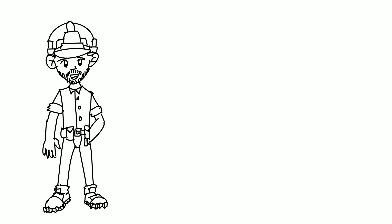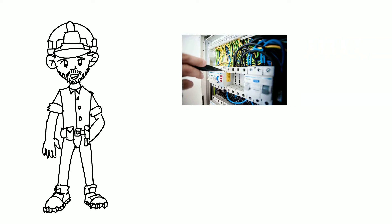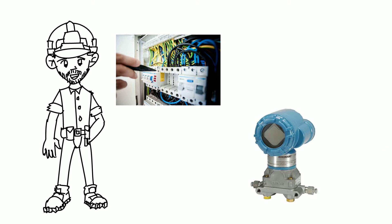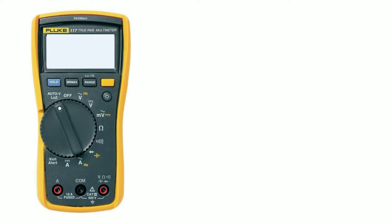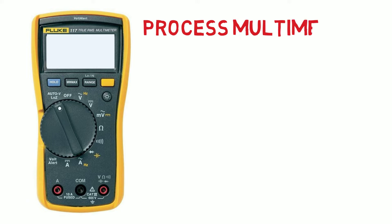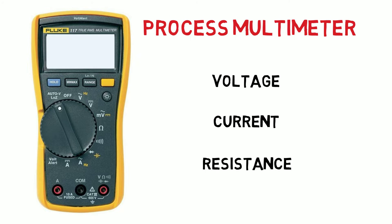As a technician you'll be frequently working on electronic equipment. You will likely be performing calibration, testing and fault finding on these electronic loops and circuits. In order to understand exactly what is happening within these loops and perform your role as a technician, it is vital you understand how to use a digital process or multimeter in order to measure and simulate loop characteristics such as voltage, current and resistance within these circuits.